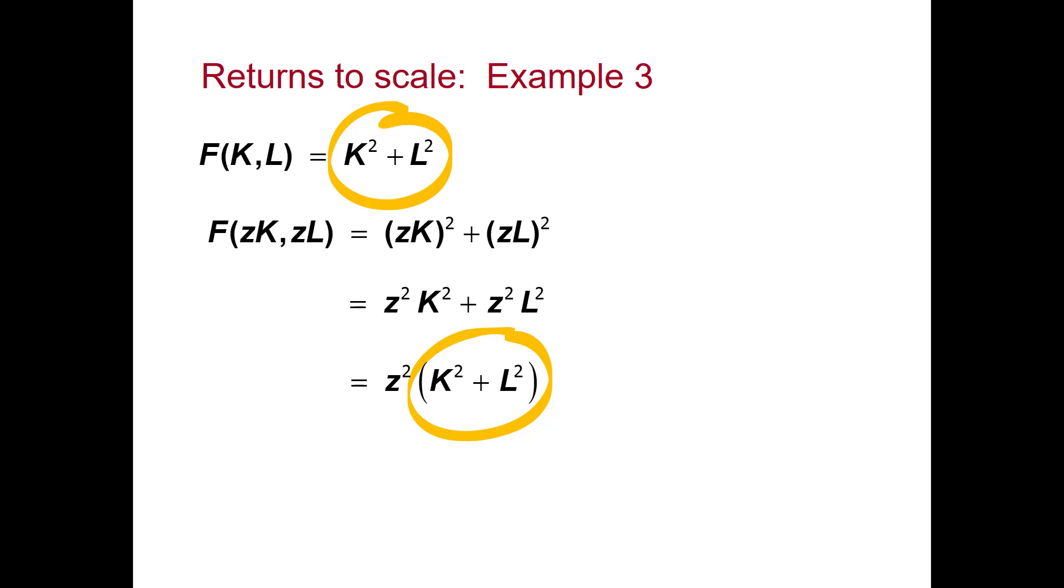Where Z is greater than 1, for example, 2, if we increased both labour and capital by 2, then output will increase by 2 squared, 4. For this type of production function, we have increasing returns to scale.